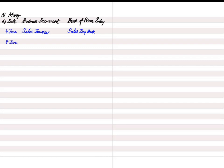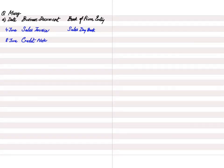On 8th June, Mary returned goods purchased on 4th June. When a customer returns goods to us, this is a return inward, also known as a sales return. The document issued is a credit note — when Mary returned goods, she issued us a debit note. The book of prime entry is the returns inward journal, also known as the sales return journal or sales return day book.